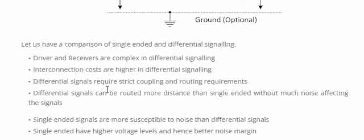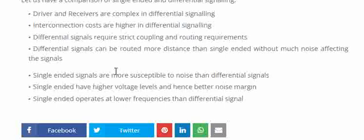One important advantage of differential signaling is that you can route the signals over a long distance without noise impacting them, whereas single-ended signals can have noise easily impacting them. This means single-ended signals are more susceptible to noise than differential signals.